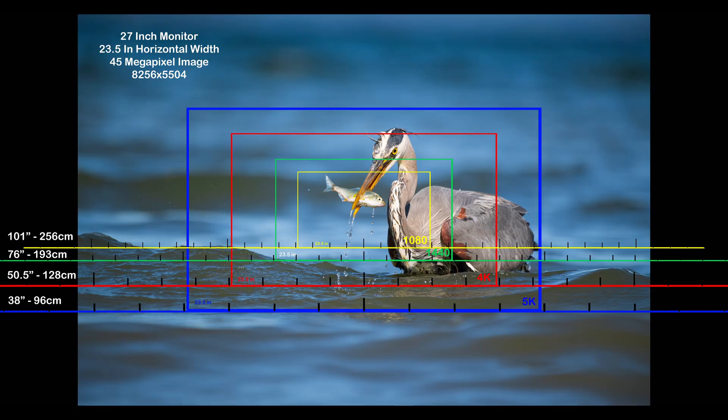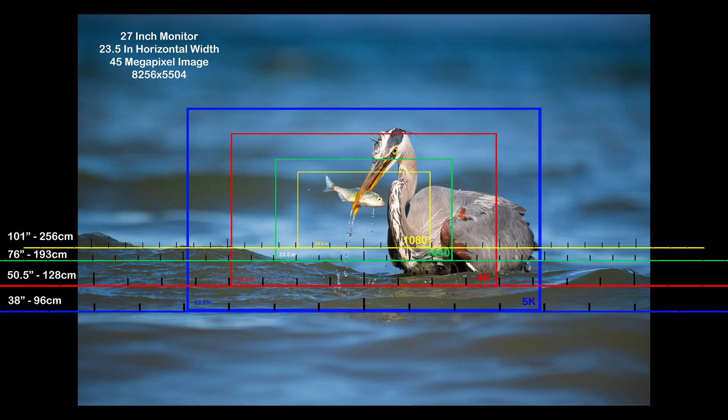It gets really confusing, and I've set up a couple of files in Photoshop here that we're going to go through to give a demonstration of what you're actually looking at when you're looking at a one-to-one file on a bunch of different monitor sizes. So let's take a look at some examples on my computer. What we're looking at here is a 45 megapixel image off my Z8 — that is 8,256 by 5,504 pixels. The boxes here represent the different monitor resolutions: 5K in blue, 4K in red, QHD in green, and HD in yellow. For the purpose of this example, we'll be looking at a 27-inch monitor.